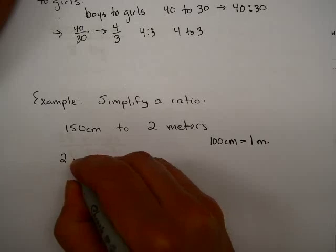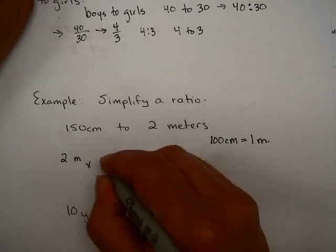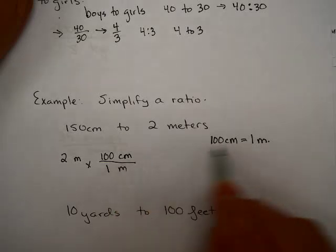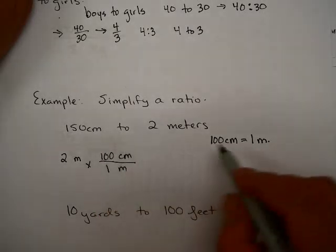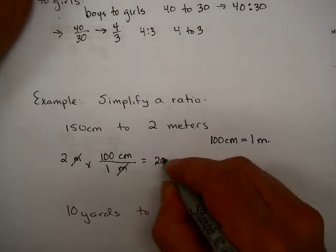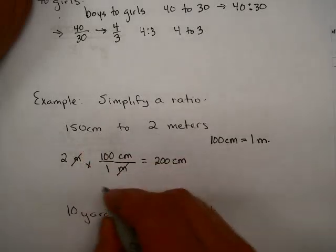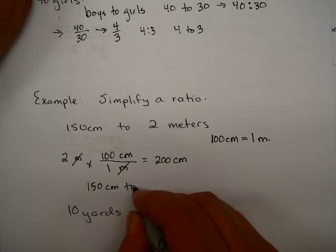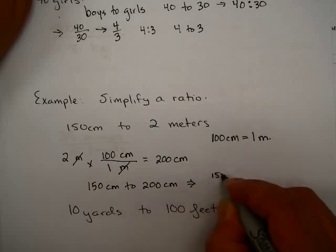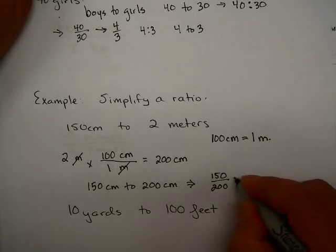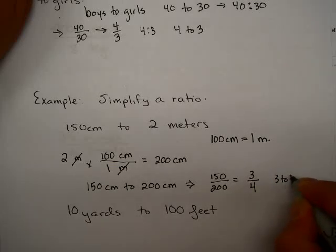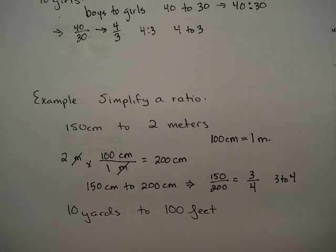I'm going to take 2 meters and multiply by 100 centimeters in 1 meter. The meter units divide out and you get 200 centimeters. So this problem becomes 150 centimeters to 200 centimeters. That's going to be 150 over 200, which we could take 50. That would be 3 here and 4 here. So you would say 3 to 4 as your ratio, or 3 fourths.